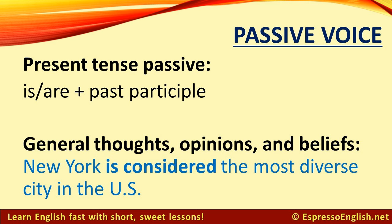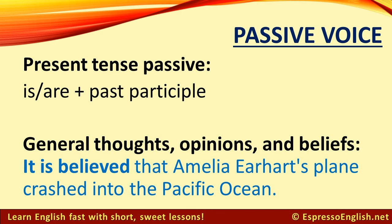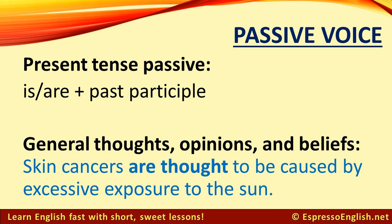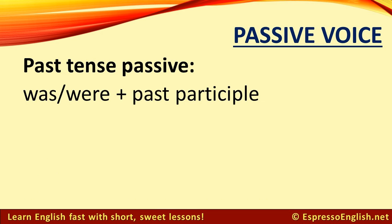For example: New York is considered the most diverse city in the US. It is believed that Amelia Earhart's plane crashed into the Pacific Ocean. Hungarian is seen as one of the world's most difficult languages to learn. Skin cancers are thought to be caused by excessive exposure to the sun.